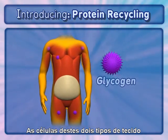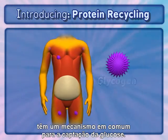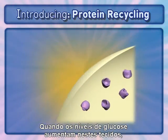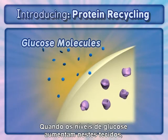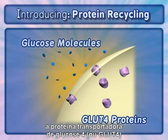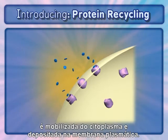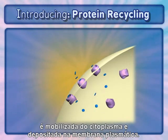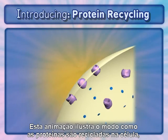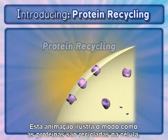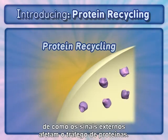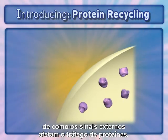The cells in these two tissue types have a common mechanism for taking up glucose. When glucose levels rise in these tissues, the glucose transporter 4, or GLUT4 protein, is mobilized from the cytoplasm and deposited in the plasma membrane. This animation illustrates how proteins are recycled in the cell, a basic concept critical to understanding how external signals affect protein trafficking.